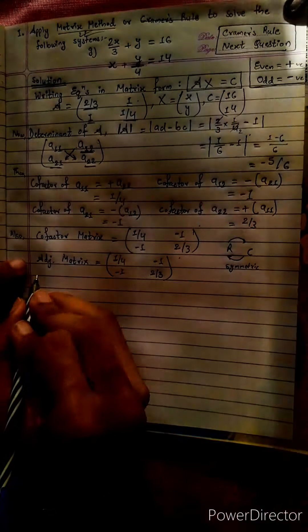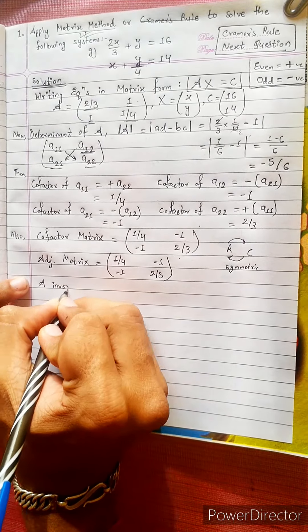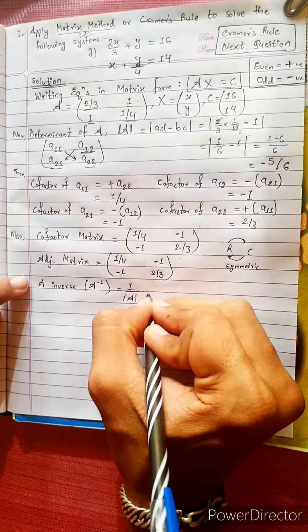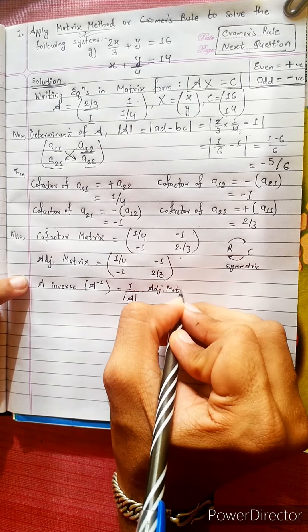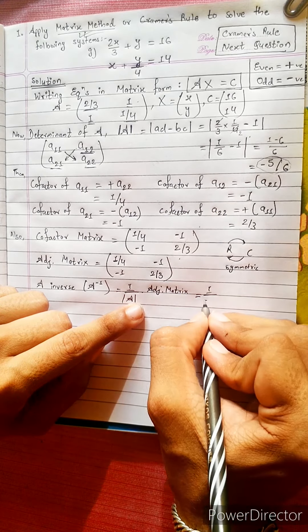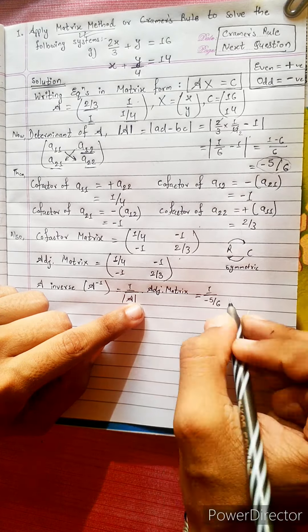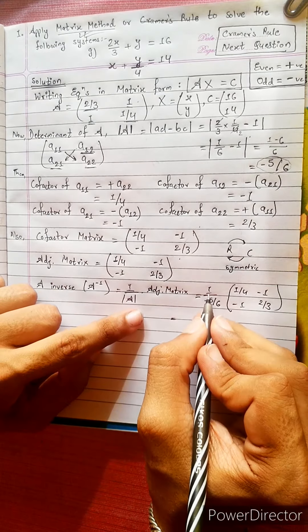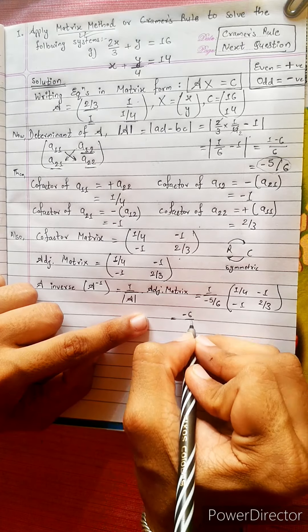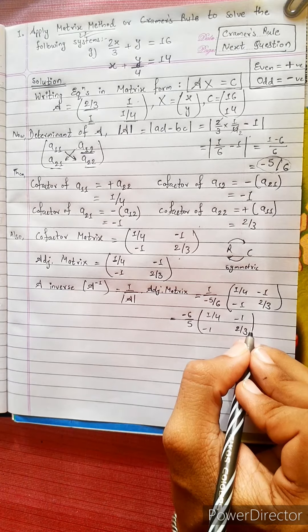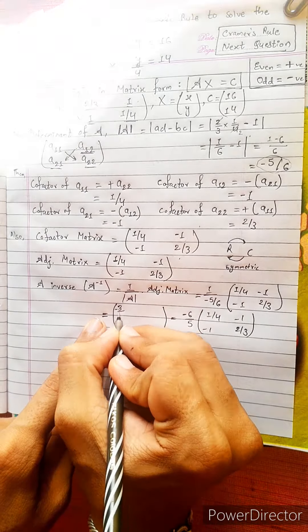Now we compute A inverse. The formula is A inverse equals 1 divided by the determinant of A, multiplied by the adjoint matrix. The determinant is minus 5/6, so the reciprocal is minus 6/5. Multiplying: A inverse equals minus 6/5 times the adjoint matrix with values 1/4, minus 1, minus 1, 2/3. This gives elements minus 3/10, 6/5, 6/5, and minus 4/5.